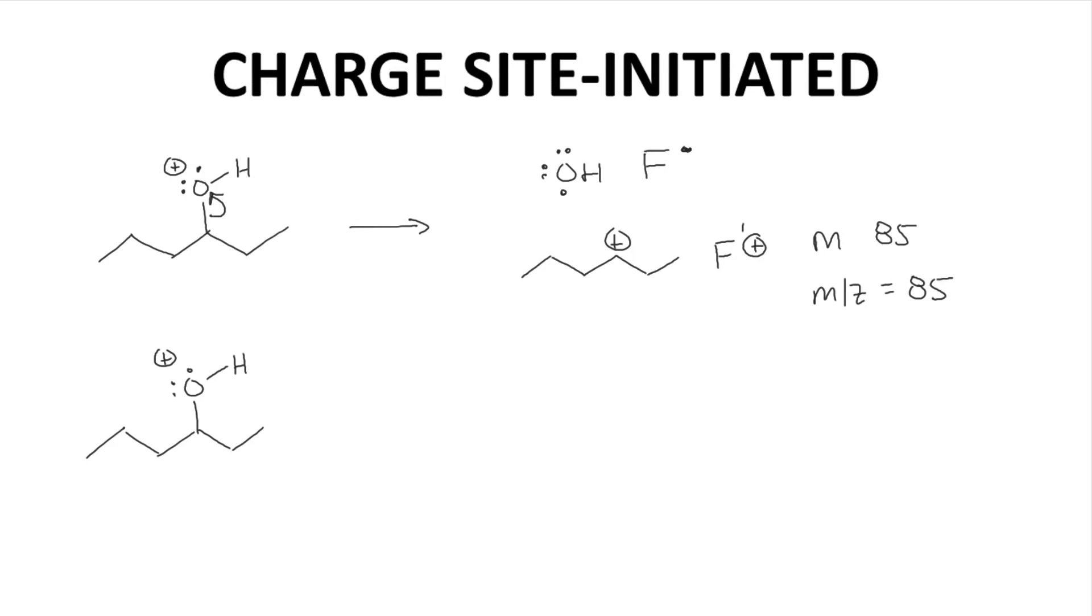The other fragmentation option would be for the CO bond to break homolytically. One electron can go to the oxygen and the other to the carbon. That would give a neutral carbon radical, which would not be detected. The OH fragment has a positive charge and would be the fragment cation with an mz value of 17.